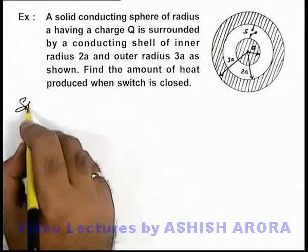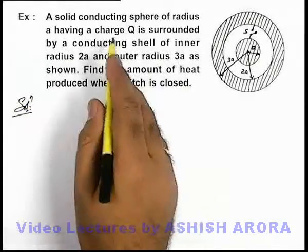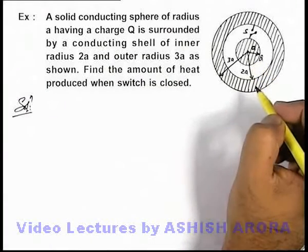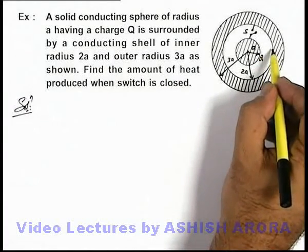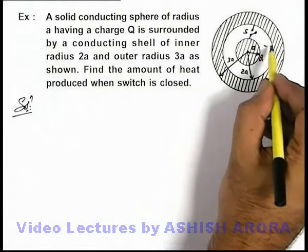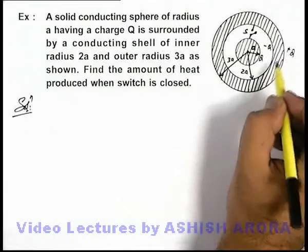In this situation, if we analyze the charge configuration, a charge Q is given on the inner sphere. We know that the whole of its flux will terminate on the inner surface of the outer shell. A charge minus Q will be induced here, and a charge plus Q will be induced on the outer surface.